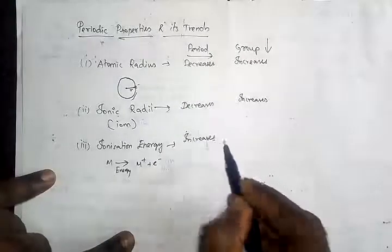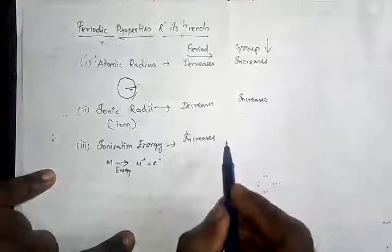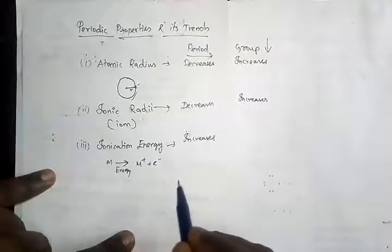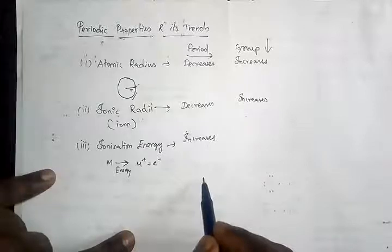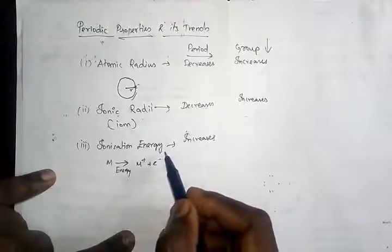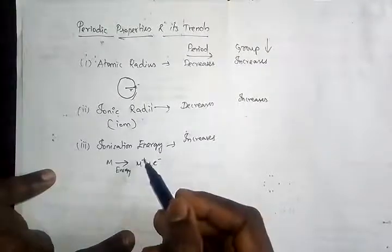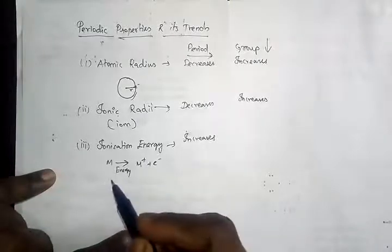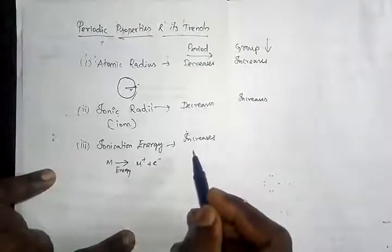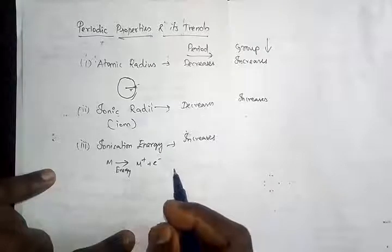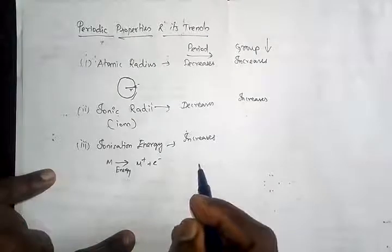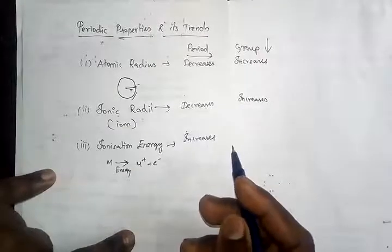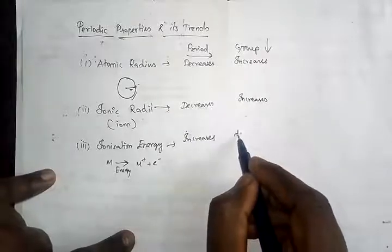Down the group, the distance between the nucleus and the outermost shell increases because more energy levels are added. So the attraction power decreases, the electron is lost easily by the atom, and ionization energy decreases.